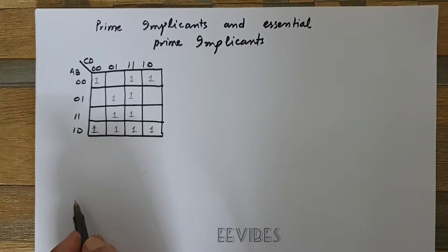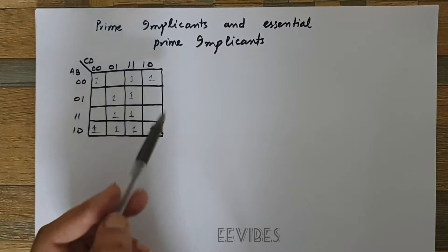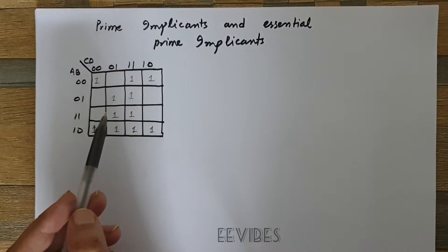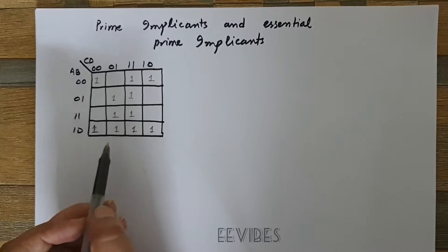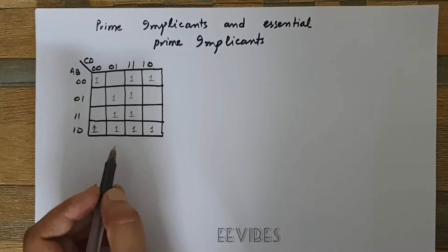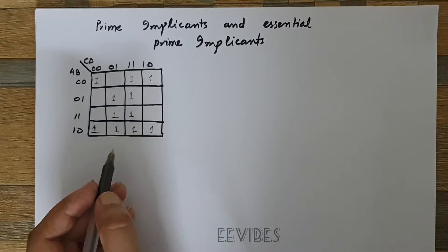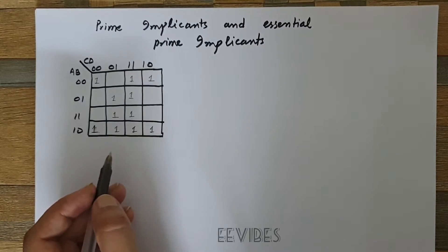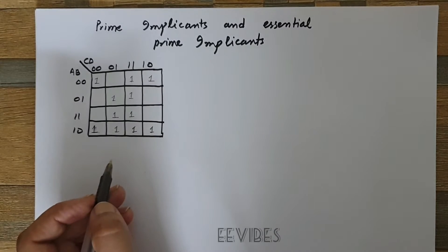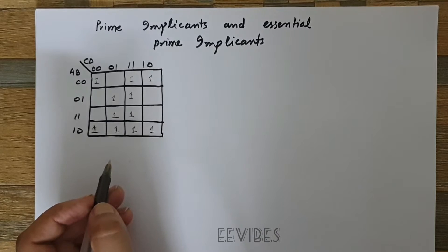The prime implicants of a function can be obtained from the map by combining all possible maximum number of squares, which will always be of the order 2 raised to power n. A single one on a map represents a prime implicant if it is not adjacent to any other ones. Two adjacent ones form a prime implicant provided they are not within a group of four adjacent squares.